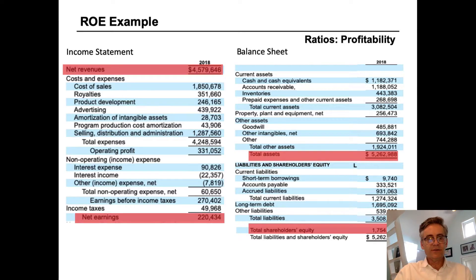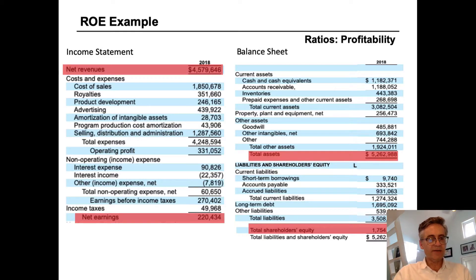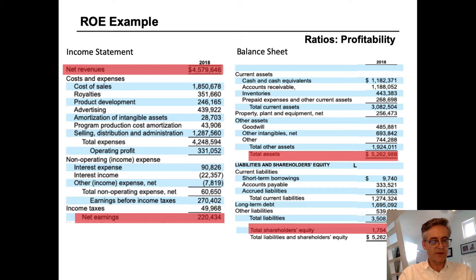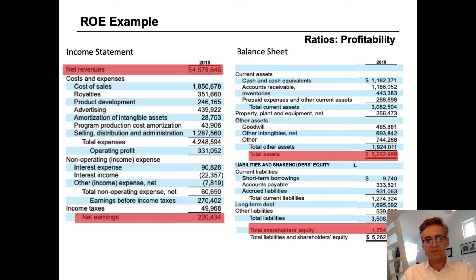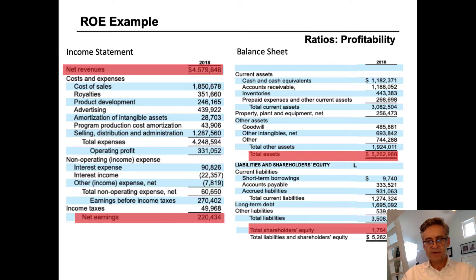In order to get the data we need, we look at both the income statement and the balance sheet. Here is Hasbro's 2018 income statement and balance sheet. We need net revenues and net earnings from the income statement — that's $4.579 billion in net revenues and $220 million in net earnings. And then assets and shareholders' equity from the balance sheet — $5.26 billion in assets and $1.75 billion in shareholders' equity. Now we have all the data we need to proceed to the DuPont equation.